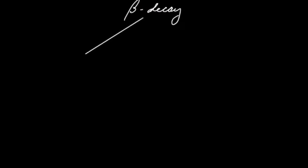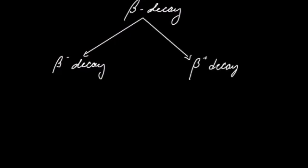Another type of radioactivity is called the beta decay. And there are two types of beta decays, the beta-minus decay and the beta-plus decay. In a beta-minus decay, a neutron turns into a proton plus an electron.